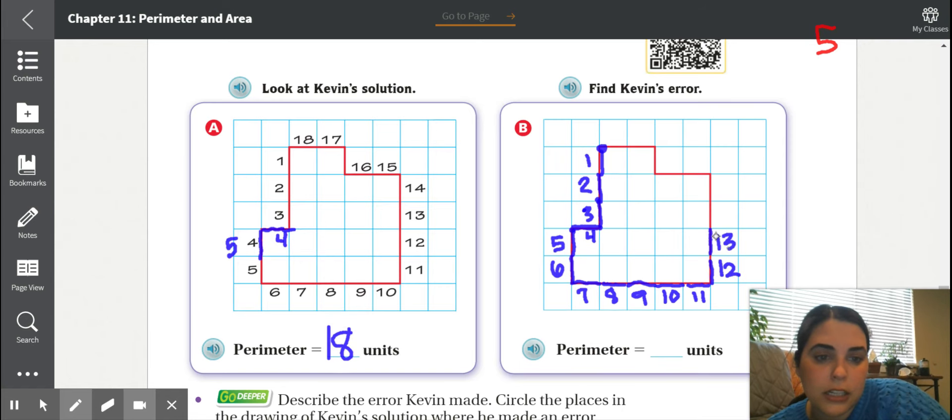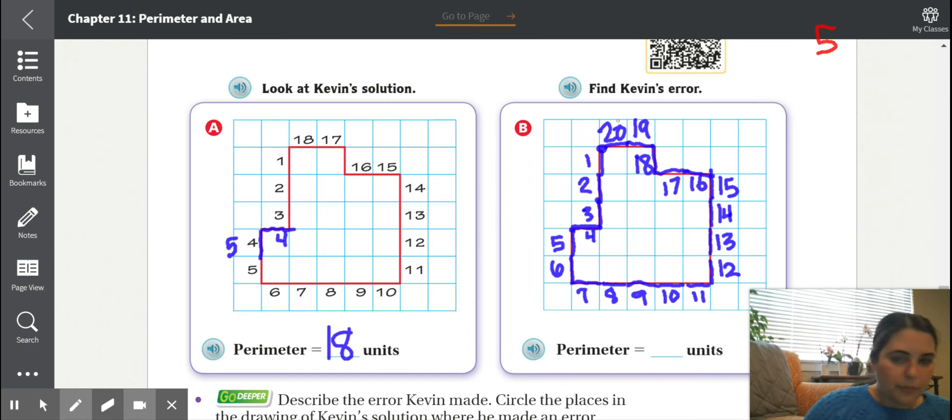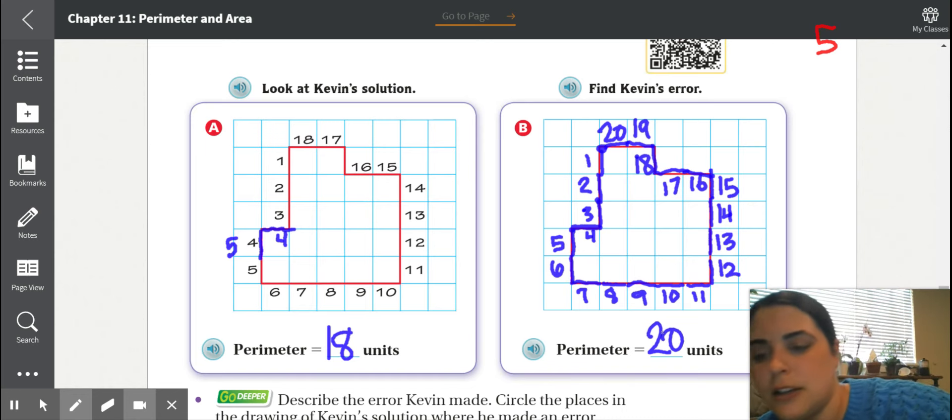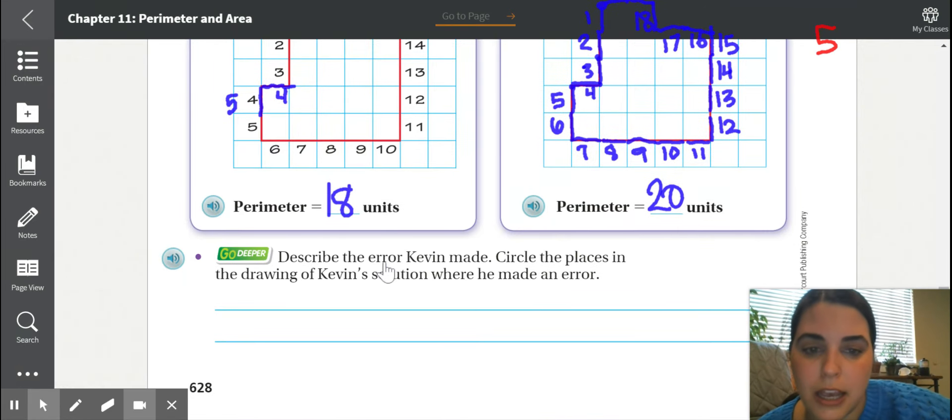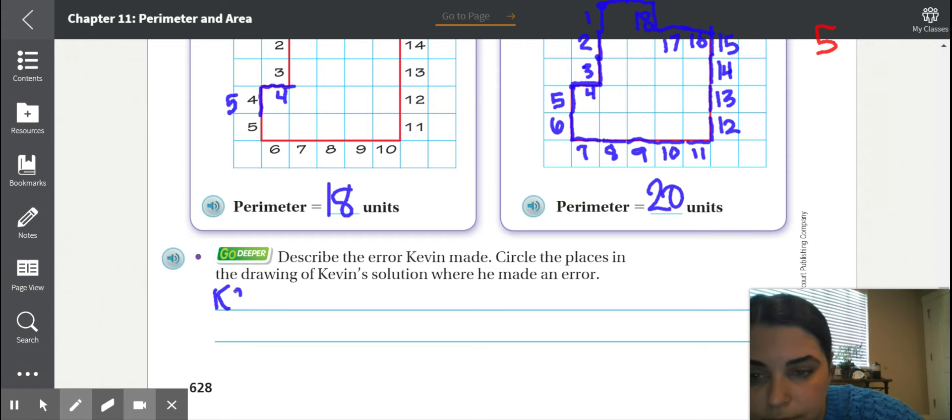10, 11. Now we have to go up. 12, 13, 14, 15, turn, 16, 17, turn, 18, 19, and 20. So Kevin made a mistake because he did not count all of the sides. If we're going to describe what he did, describe the error that Kevin made a mistake and then circle the places in the drawing where he did make a mistake. So what did Kevin do? Kevin did not count.